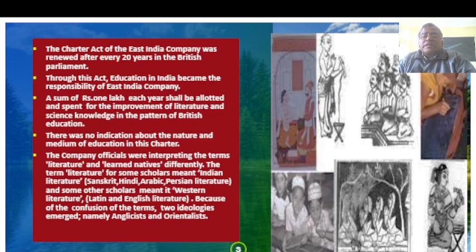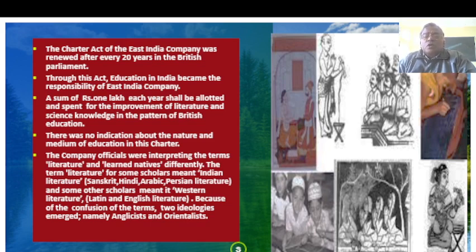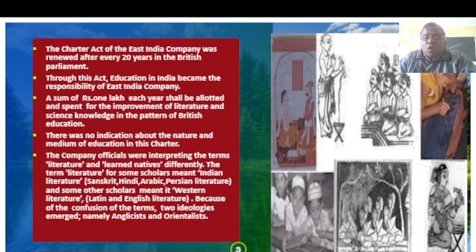The company officials were interpreting the terms 'literature' and 'learned natives' differently. The term 'literature' for some scholars meant Indian literature — Sanskrit, Hindi, Arabic, and Persian literature — while some scholars interpreted it as Western literature, namely Latin and English literature. Because of this confusion, two ideologies emerged: Anglicist and Orientalist, or Western scholars and Eastern scholars.